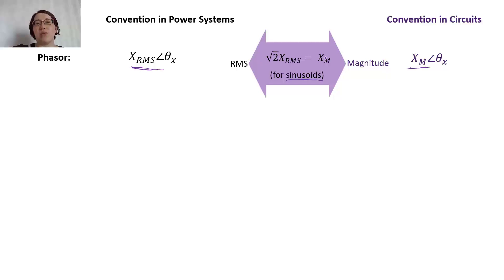You can convert between those two in that way, and really it's just that difference between the two. But if you forget which one you're in, you're going to get confused. So in circuits we use a magnitude in the phasor, and then in power systems we use the RMS value.